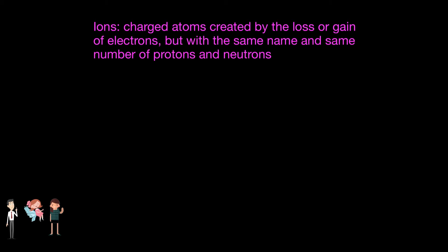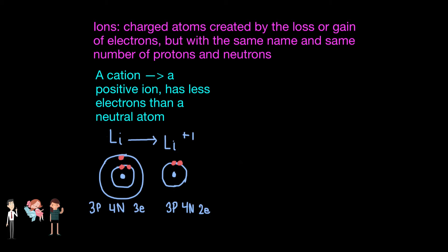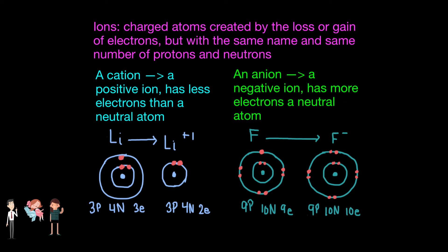Now that we know about atomic radius, how about the radius when the element is an ion instead? Ions are charged atoms created by the loss or gain of electrons, but with the same name and same number of protons and neutrons. A cation, a positive ion, has fewer electrons than a neutral atom, whereas an anion, a negative ion, has more electrons than a neutral atom. With fewer or more electrons, the ratio between protons and electrons changes, and thus the ionic radius of the ion will be different than its original atom.